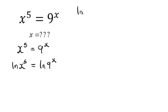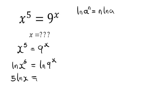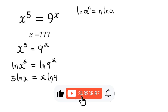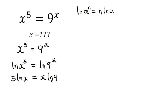The law of logarithms says that whenever I have a natural log of a number a raised to a power n, I use the power n to multiply the log of a. Applying this law: use the power 5 to multiply the natural log of x, equal to the power x to multiply the natural log of 9.